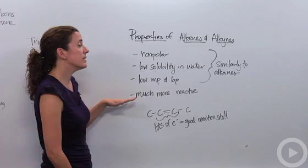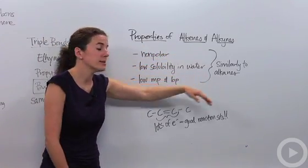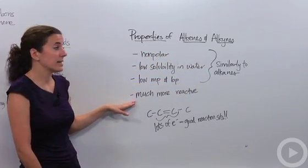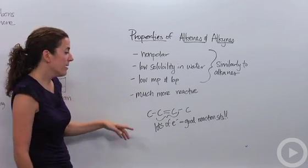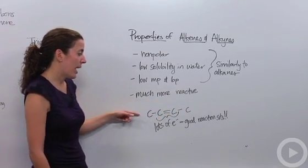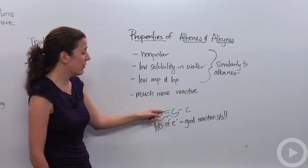And however, the difference between alkenes and alkynes versus alkanes is that they're much more reactive. So why is that? So let's look at this carbon chain we have right here. Notice we have a double bond here.